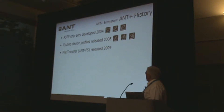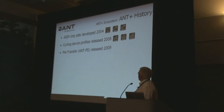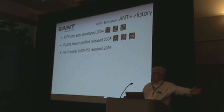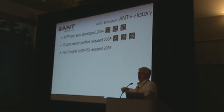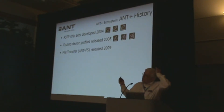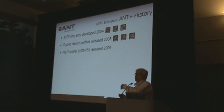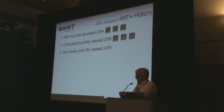ANT FS — ANT file share, or file system depending on who you're talking to — was released in 2009. That's the authentication process where your watch or bike computer comes close to a PC that's got the application running, they find each other and negotiate a relationship, and once they're at a level of authentication the data just transfers. There's no push button required — it's ubiquitous, and that's made it easy for people to implement new applications without having to go through the year to year-and-a-half of development it took some early members.